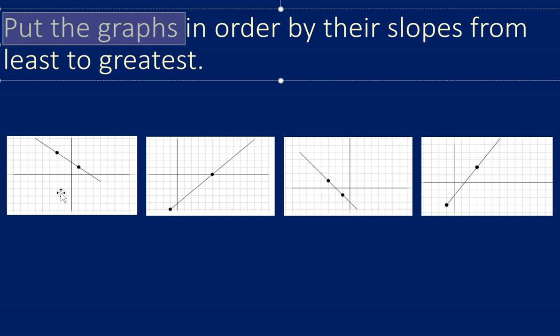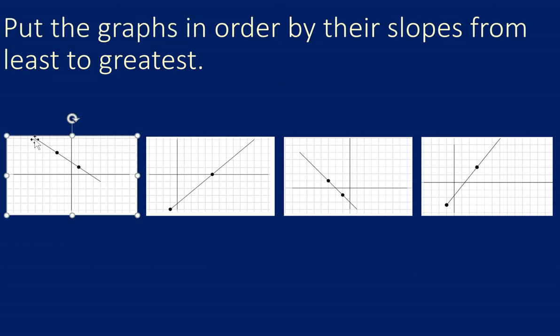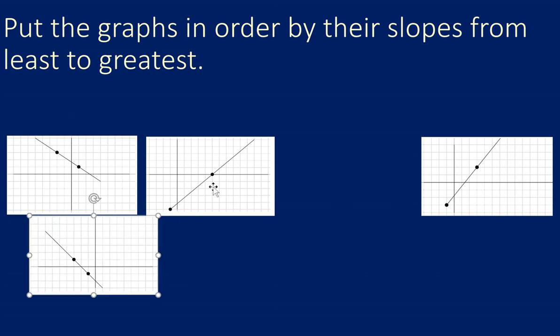So as we're reading these graphs, if I start on the left side of the line and follow it along, in this first one I see a decrease so that is a negative slope. Whereas this one from left to right is an increase so that's a positive slope. So right away I know negatives are always smaller or less than positives, so let's move all the downward sloping lines towards the left side so these will be the smaller slope lines.